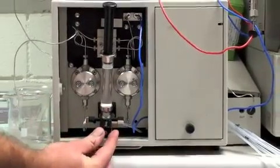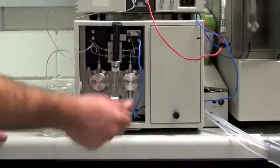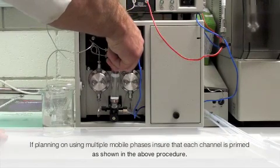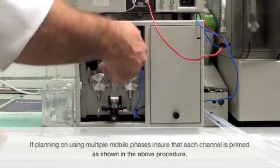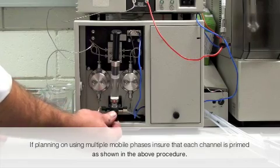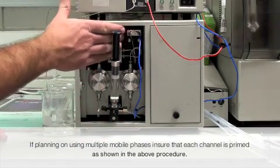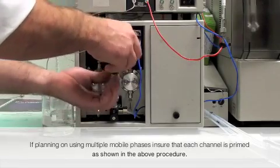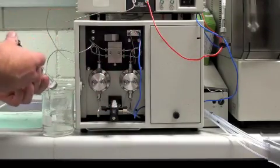You then turn this switch to the inject position, and inject a small amount of the solution back through the pump. After this, you then put this to the run position, you move this valve to the left, you've now primed your pump, and the solution is now running through the column.